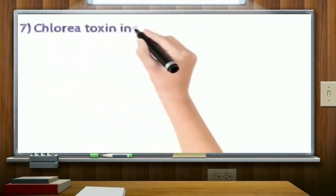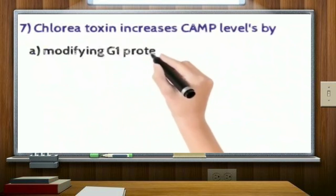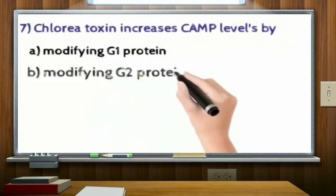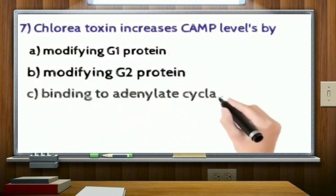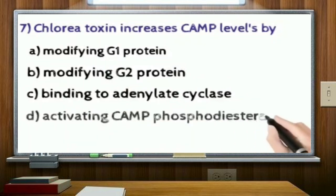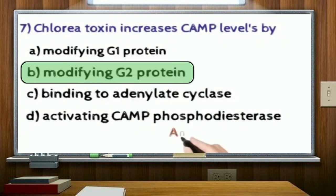Cholera toxin increases cAMP levels by: option A, modifying Gs protein; option B, modifying Gi protein; option C, binding to adenylate cyclase; and option D, activating cAMP phosphodiesterase. Correct answer: option B.